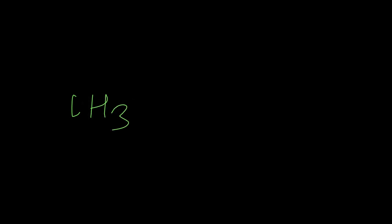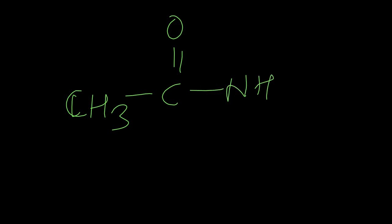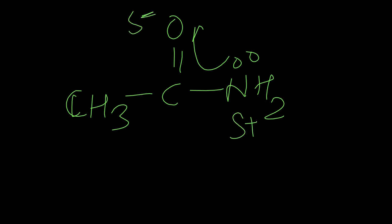In aqueous phase, basicity changes based on alkyl groups. The fourth option is called an amide: CH3, C double bond O, NH2. Amide has very low basic strength because the negative charge goes to oxygen and positive charge comes on nitrogen.